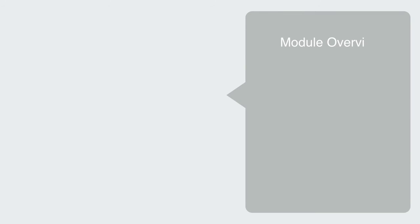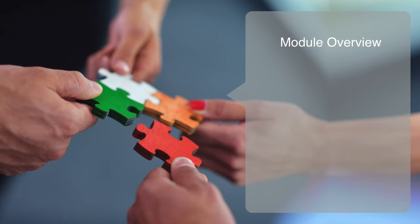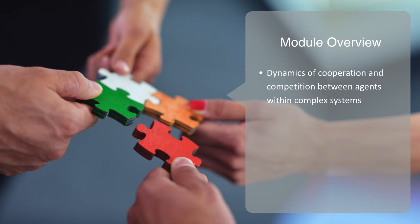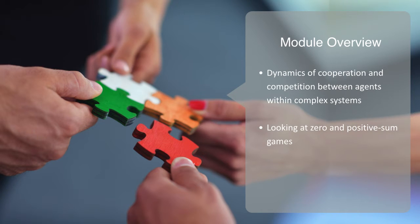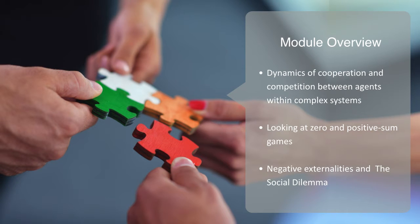In this module, we're going to talk about the dynamics of cooperation and competition between agents within complex systems. We will firstly discuss the general concept before looking at zero and positive sum games. Following this, we will be talking about negative externalities as we look at the so-called tragedy of the commons and social dilemma.